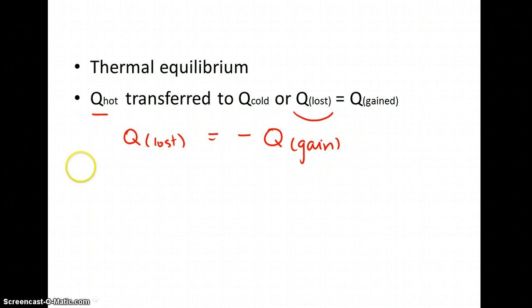We can rewrite this remembering that Q equals MC delta T. We can rewrite this equation to look like this, that Q lost from one substance can be the same as a negative MC delta T. It's more or less replacing these Q values with the MC delta T. We're going to actually go through a problem where we're doing this.